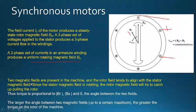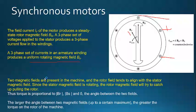The two magnetic fields are present in the machine and the rotor field tends to align with the stator magnetic field. Since the stator magnetic field is rotating, the rotor magnetic field will try to catch up, pulling the rotor along. Consider this analogy: if you have a car pulling a wheel attached to it, at every instant the wheel tries to catch up with the car. Since the car is moving, the wheel chases it and both move at the same speed, but the wheel can never fully catch up — the distance between them remains constant.